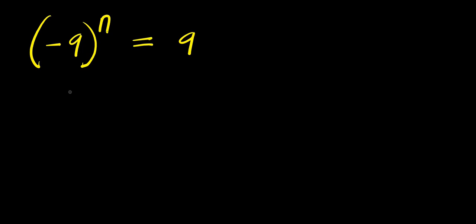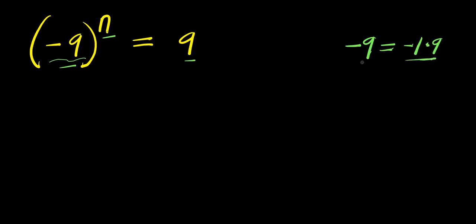Hello. How to solve this exponential problem and find the value of n that satisfies this equation. This is negative 9 to the power of n, and this equals 9. So we are going to start by replacing this negative 9 here with negative 1 times 9. Of course, negative 1 times 9 is negative 9, so we have negative 1 times 9 raised to the power of n.